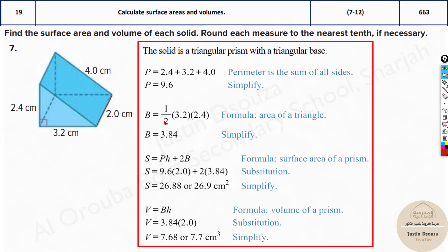It's all substitution. Once you find the perimeter, the base, substitute it and you will get the answers. Same way you can solve the others. All you need is surface area, which is 26.9. They have asked to the nearest tenth. And then the volume, that is 7.7 cubic centimeter.